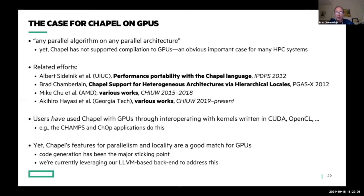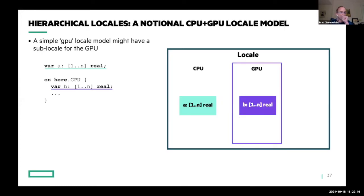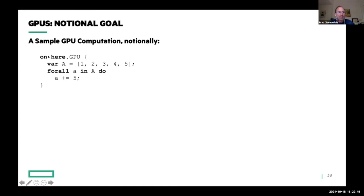Users have used Chapel with GPUs through interoperability — writing kernels in CUDA or OpenCL and calling out to them — but that's not ideal from a productivity standpoint. We'd argue Chapel's task and locality features are a really good match for GPUs. Code generation has been the major sticking point, and we're currently tackling that by leveraging our LLVM backend. The idea is hierarchical locales: locales can contain sublocales, so each compute node would have a sublocale representing the GPU, and 'on here.gpu' would allocate in GPU memory and run computation there.